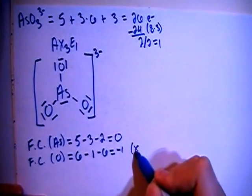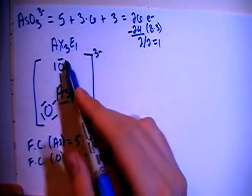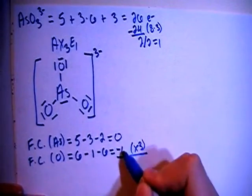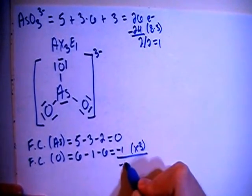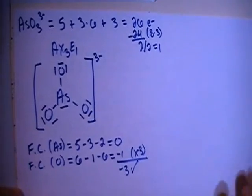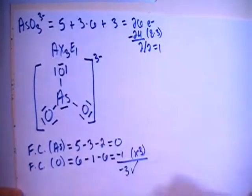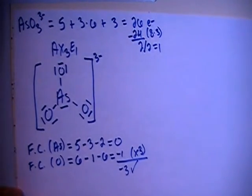We multiply that times 3, because there are 1, 2, 3 of them. We add all these up, that gives us an overall formal charge of negative 3, which is what we need, because the charge on this ion is minus 3. So that matches up, and that's what you need.